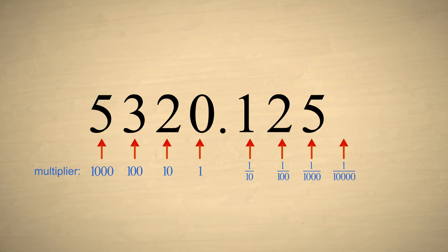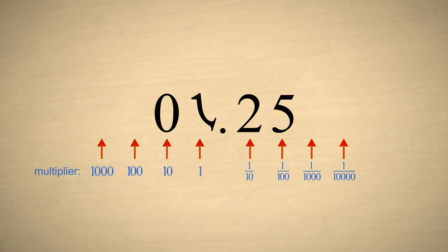For example, the decimal equivalent to the fraction one-eighth is zero point one-two-five. If we multiply this number by ten, each digit is shifted one column to the left. If we multiply by ten again, each digit is shifted one more column to the left. And if we multiply by ten a third time, there will be no more digits to the right of the decimal point. We will have an integer.